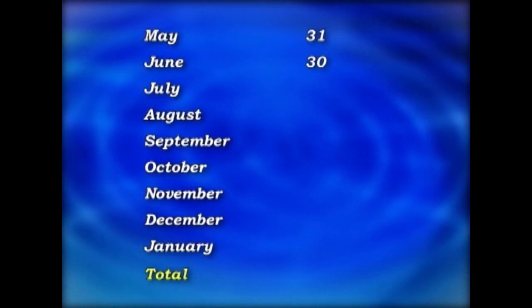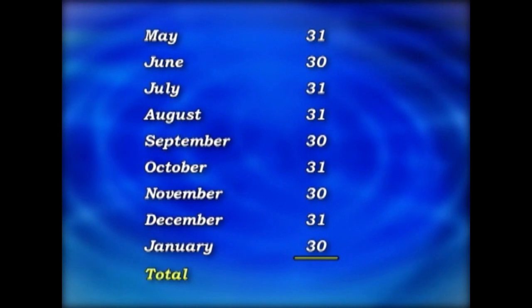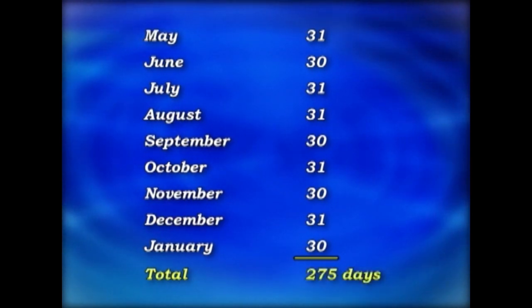May has 31 days. June has 30. July 31. August also has 31. September 30. October 31. November 30. December 31. And January — well, today is January the 30th.